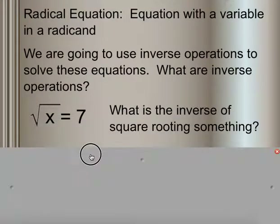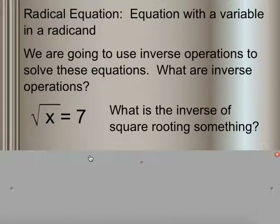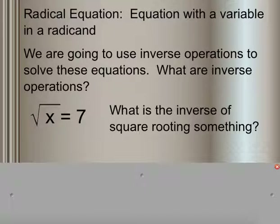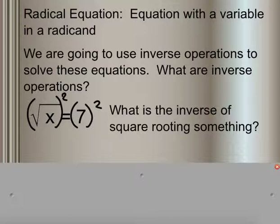So, what are they? If we have something like this and we're trying to solve for x — if I have the square root of x equals 7 — what's the inverse of square rooting something? From what we learned when we are squaring something and trying to undo that, it must be squaring. So if I take each side and square it, we should be able to get x by itself. If I take the square root of x times the square root of x — so square root of x squared — then I just get x equals 49.